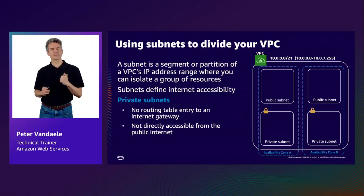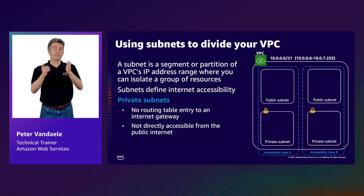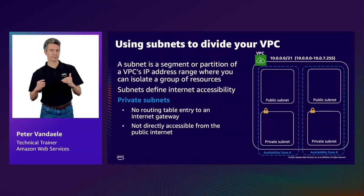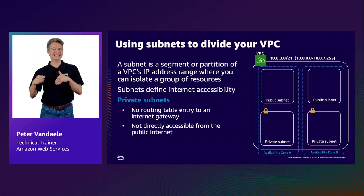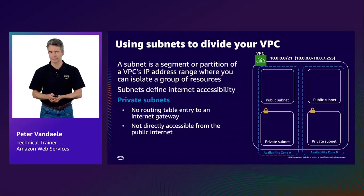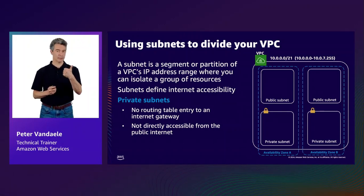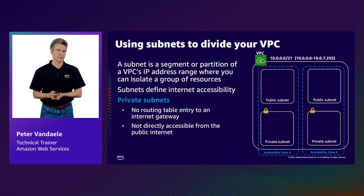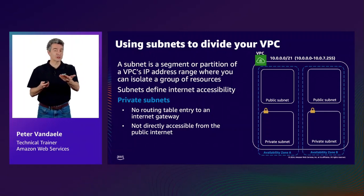We can further partition the VPC into smaller networks called subnets. Subnets live in a particular availability zone, and you can have multiple subnets in each AZ. These constructs allow us to create resources inside subnets across multiple AZs to ensure high availability. We have two types of subnets — public and private. Public subnets can be accessed via the public internet, where you might host a public-facing web application or a bastion host.